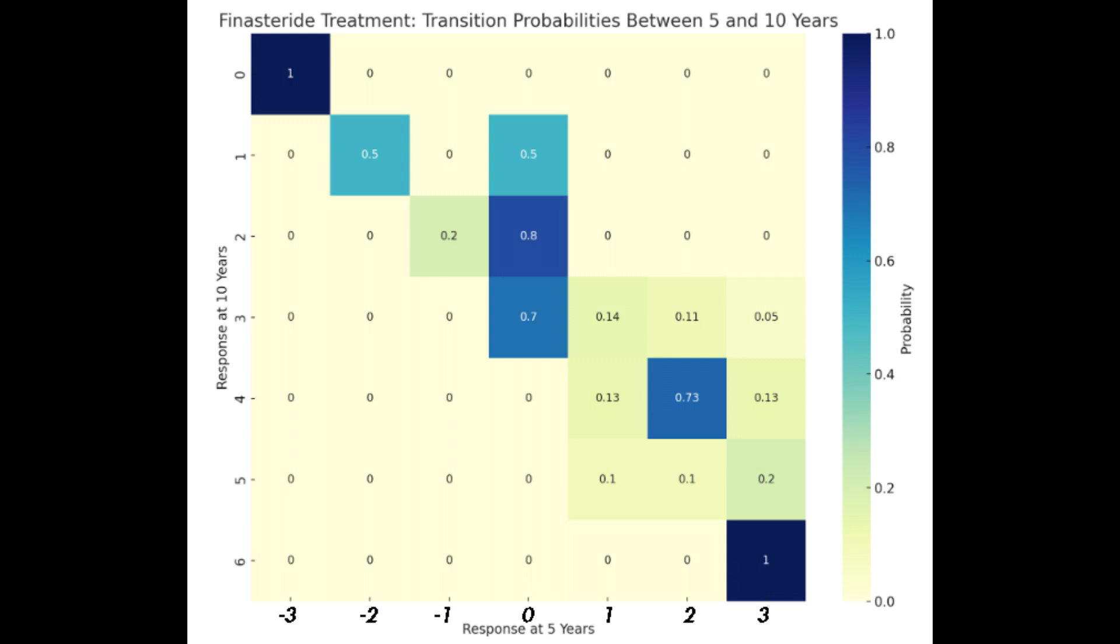So from this heat map, we can see some probabilities where patients lost some hair between year 5 and year 10. They either didn't improve because they capped out in their hair growth, or they got a little bit of improvement up to year 10.